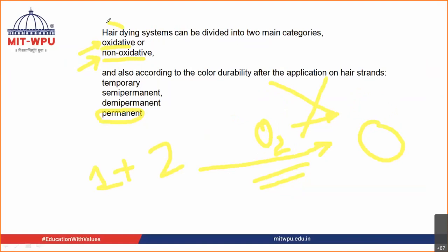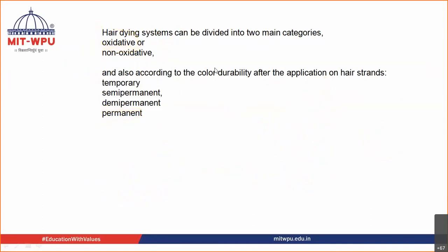Basically the temporary, the semi-permanent, and the demi-permanent hair dyes — they basically come in the category of non-oxidative. So your hair dyes are divided into two categories: oxidative and non-oxidative. Accordingly, they can be further classified as temporary, semi-permanent, demi-permanent, and permanent.